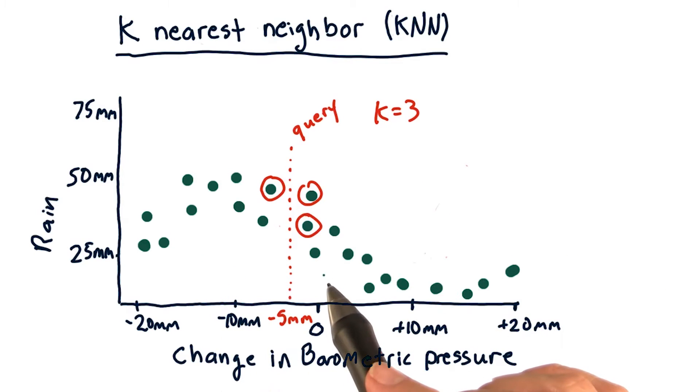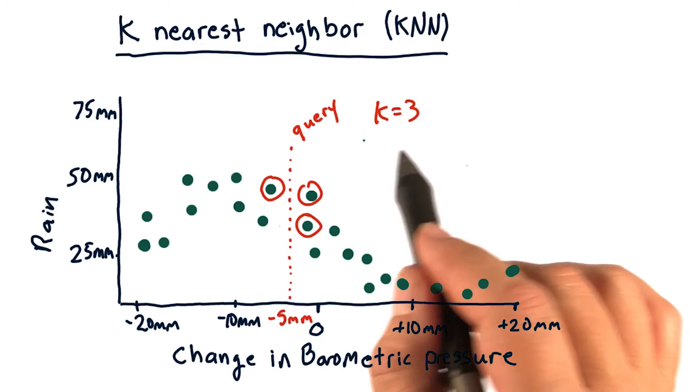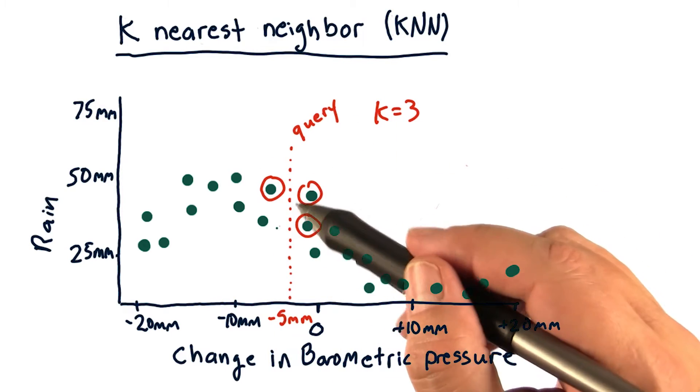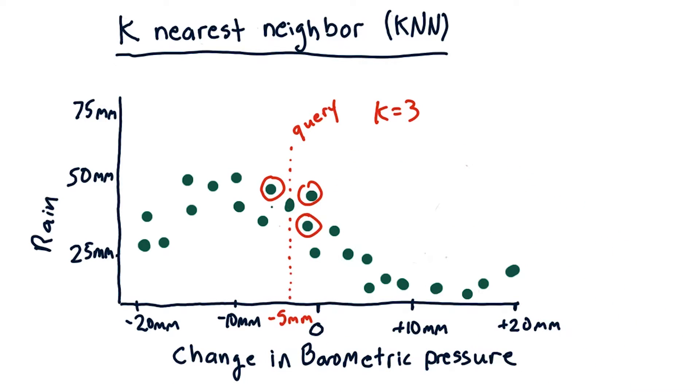So again, the correct response for this query is to take the mean of the k, where k is equal to 3, nearest neighbors. Take the mean of their y value, and that gives us a value somewhere about like there.